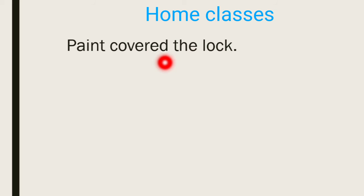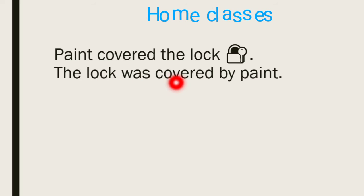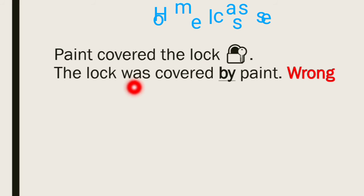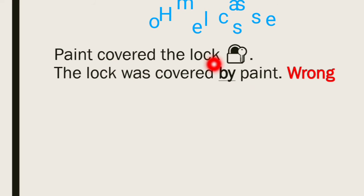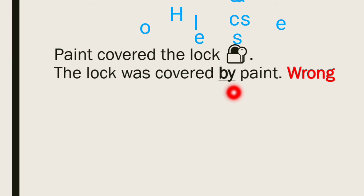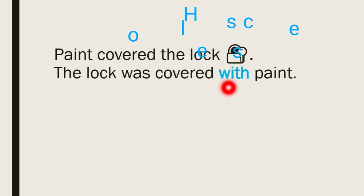Next sentence: 'Paint covered the lock.' 'Paint' is the subject, 'covered' is the verb in second form, and 'the lock' is the object. Since 'covered' is past indefinite, the passive will be: 'The lock was covered by paint.' Again, if you use 'by' here, your sentence will go wrong. 'Paint covered the lock' means it is covered with the paint, not by the paint. So in place of 'by,' we use 'with': 'The lock was covered with paint.'